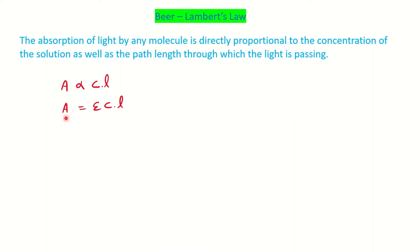We can represent this as A = εCl. You can also see in some textbooks A = aCl or aCL. Here epsilon (ε) is the molar absorptivity. If you see small 'a', that is the absorptivity. Molar absorptivity is used when concentration is represented in moles per liter, and if concentration is given in grams per liter, then we represent absorptivity as small 'a'.